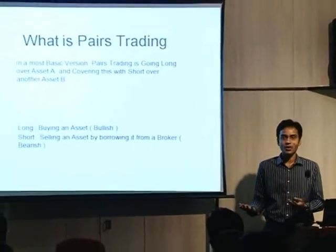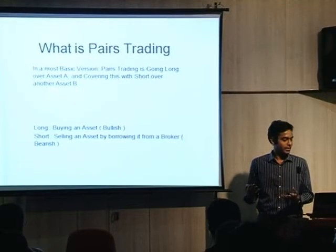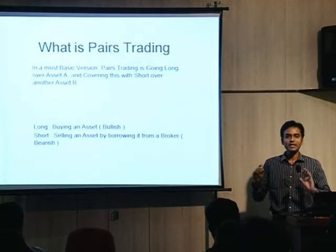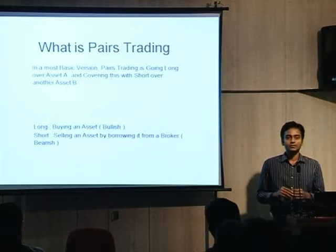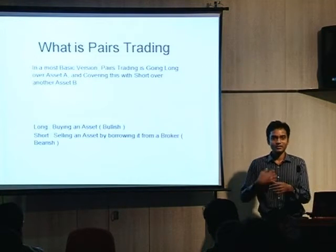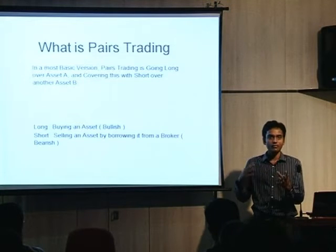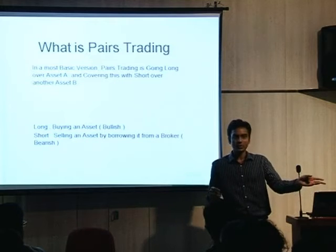This is primarily looking from a statistical and quantitative angle with respect to the technical angle that you've all been looking at. Somewhere in the middle of the presentation, I will draw a similarity between the technical as well as the quantitative, so that it's easier for you to appreciate. In its most basic form, pairs trading is essentially going long on one stock and going short on the other. Please bear with me if some concepts feel too basic — it's just to keep the flow smooth. I would like to keep this more like an open discussion, so if any idea pops up, please feel free to stop me.